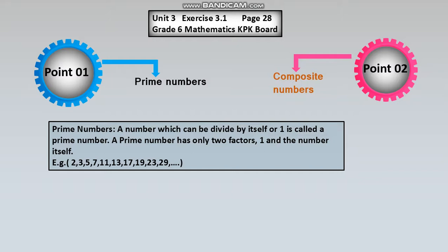A prime number has only two factors: one and the number itself. Yani wo number jo apne aap par divide hota hai ya one par divide hota hai, wahi hamare paas prime number hai. For example: two, three, five, seven, eleven, thirteen, seventeen, nineteen, twenty three, and twenty nine — yeh prime numbers hain.